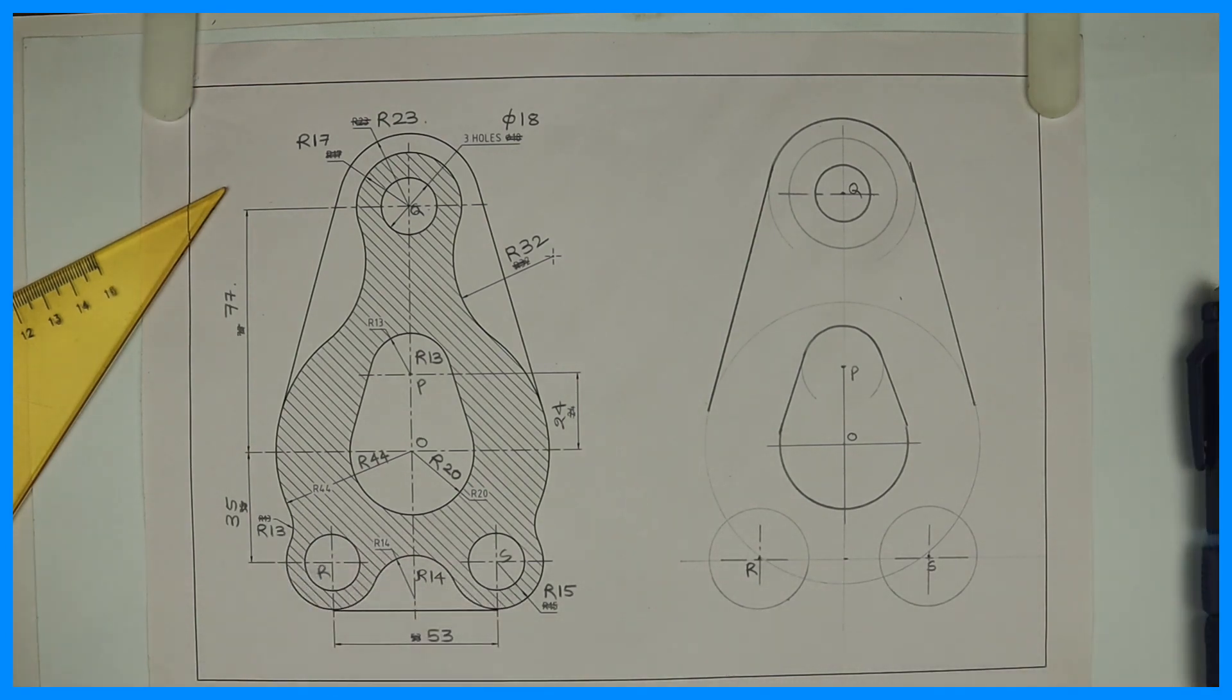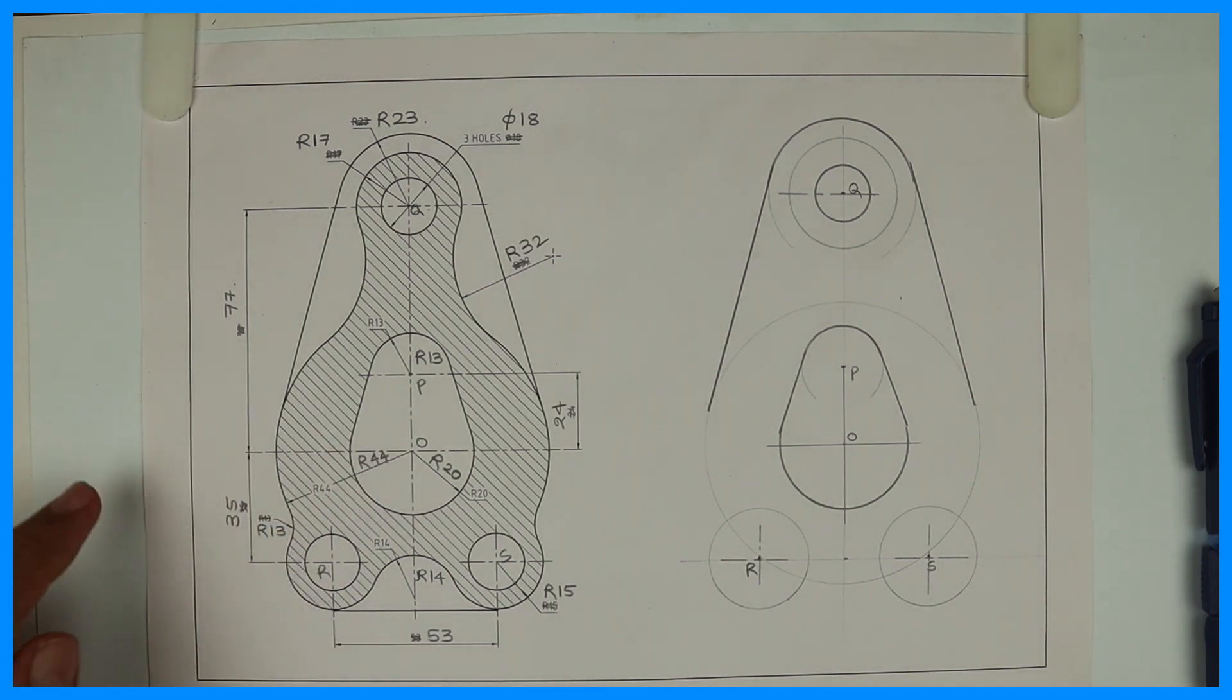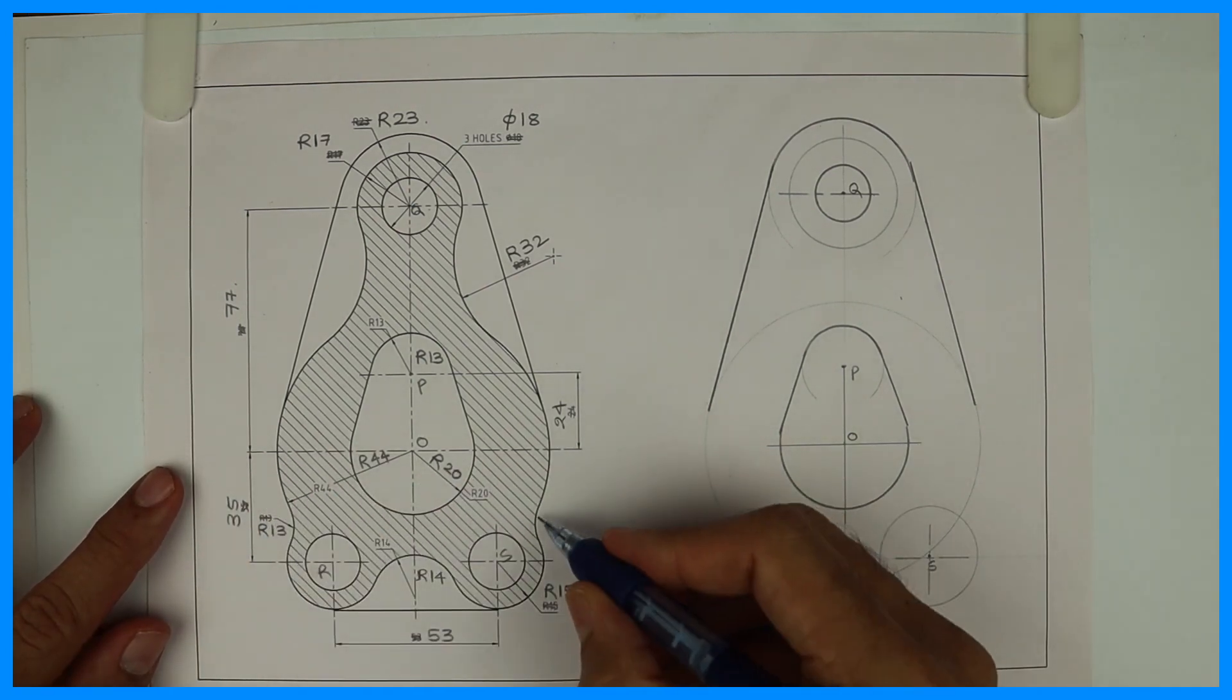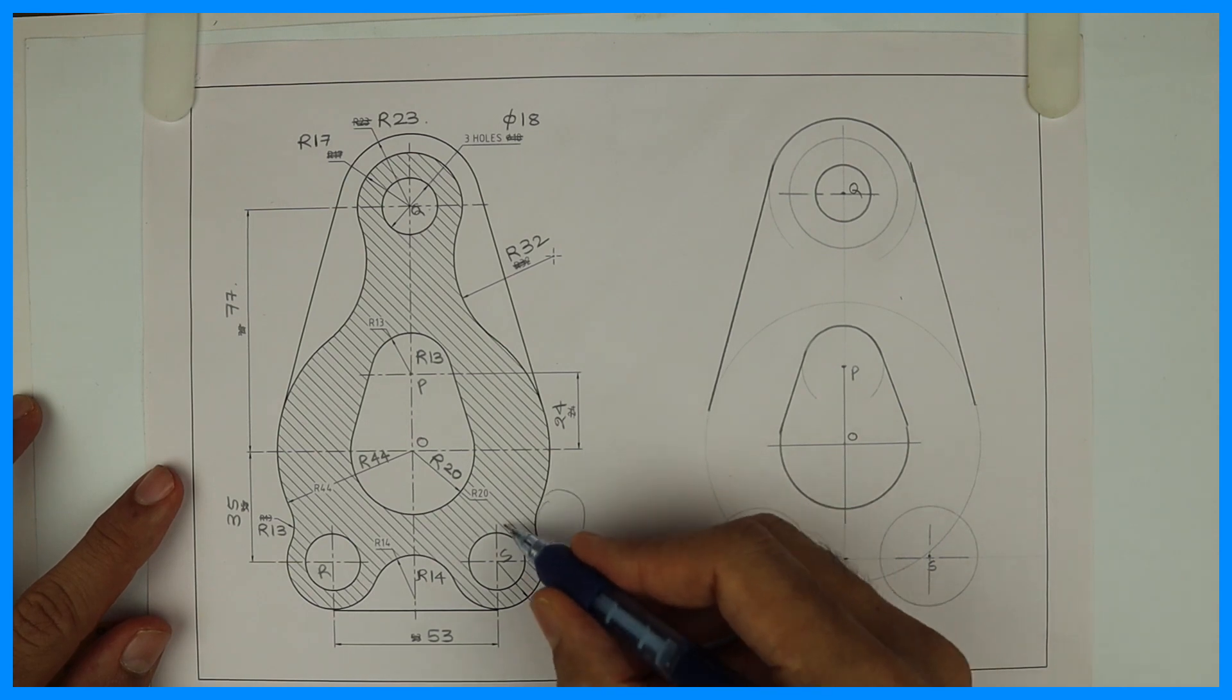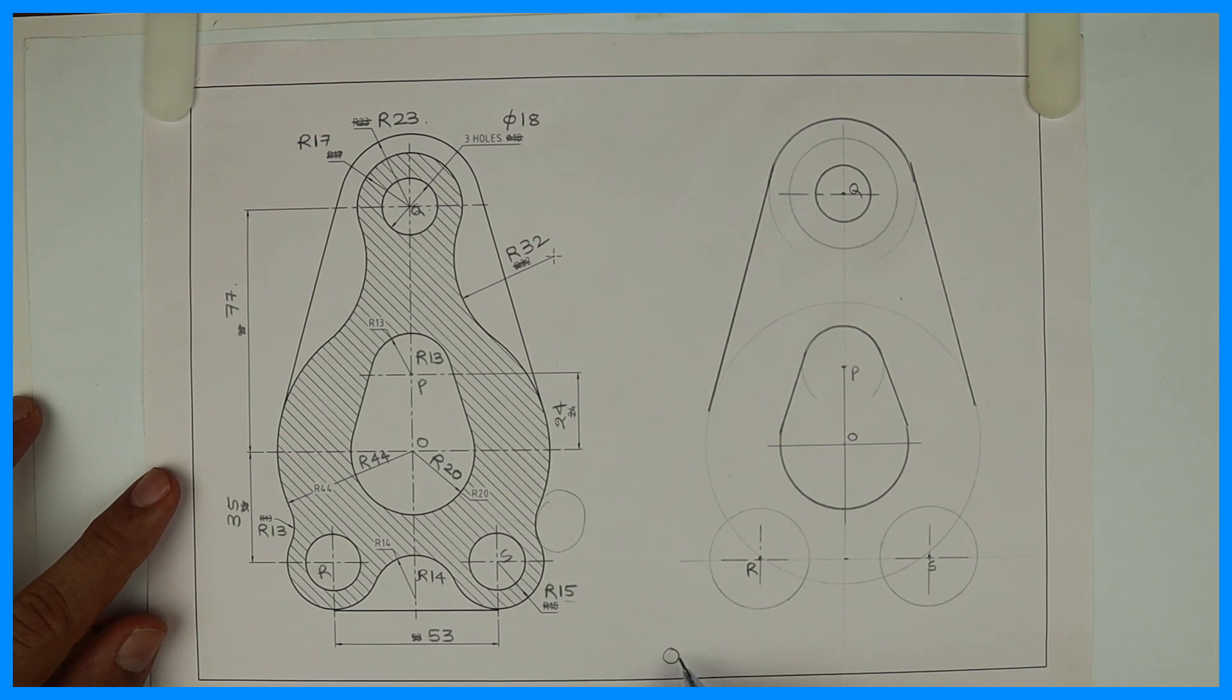Now we need to draw radius 13. So radius 13 is external circle. If you see, radius 15, this is 14, this is 13, which is external. Radius 15 plus 13 and 44 plus 13.